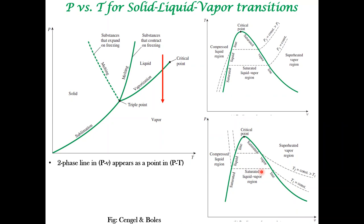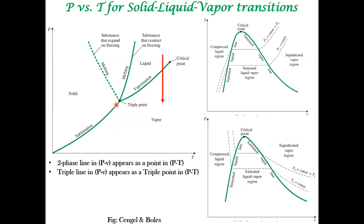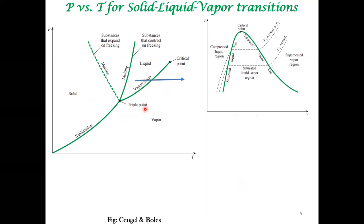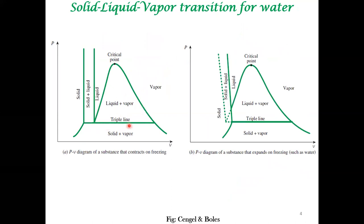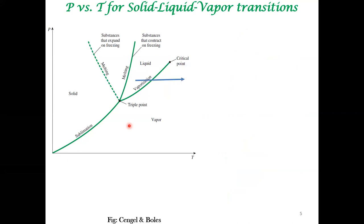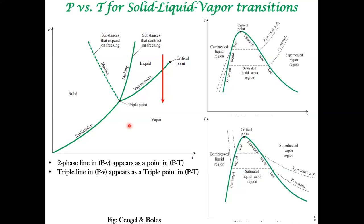The two-phase line in a PV or TV diagram is represented as a point in the PT diagram. Similarly, the triple line seen in the PV diagram appears as a triple point in the PT diagram. Phase diagrams are not just a matter of data presentation — a lot is happening. You have to understand what kind of experiment is being done to see these phase transitions.